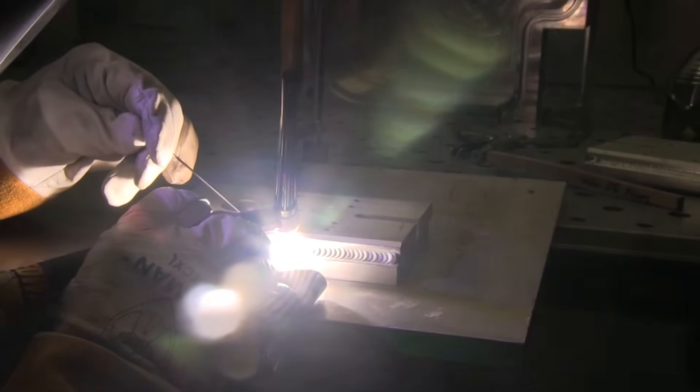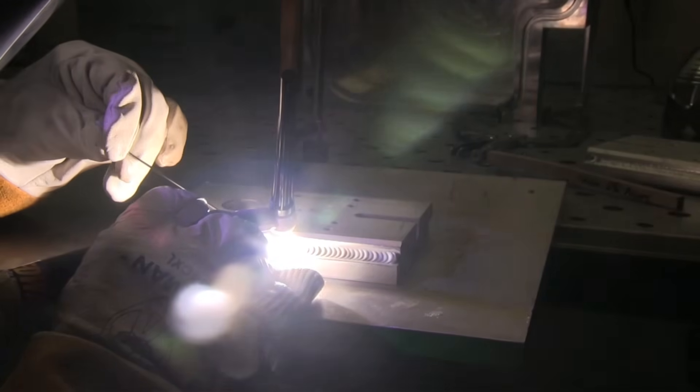We'll contrast that with one done on alternating current, about the same amperage, same electrode, but using argon and alternating current. The puddle is way cleaner, a lot easier to see. Things look a lot better in the weld.